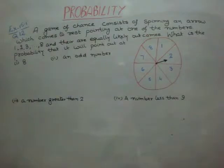Your question is, a game of chance consists of spinning an arrow which comes to rest pointing at one of the numbers 1, 2, 3, likewise up to 8. And there are equally likely outcomes. What is the probability that it will point out at 1st is 8, 2nd is an odd number, 3rd, a number greater than 2, and 4th is a number less than 9?